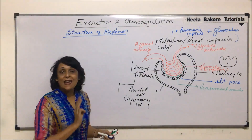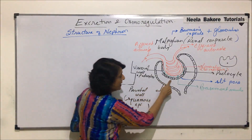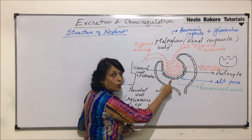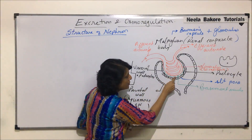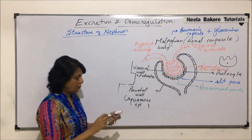There are three layers actually. There is a layer of podocytes, then there is basement membrane and capillary.